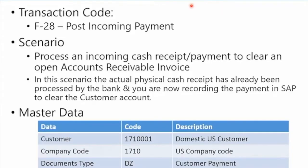Now that you've learned how to display and enter different kinds of invoices and report on them, we're now going to look at processing a manual cash receipt. This transaction code is F-28. Remember, this is a payment incoming from the customer — cash receipt depending on your terminology.